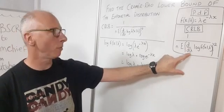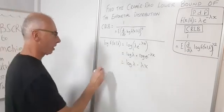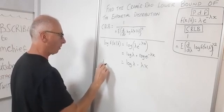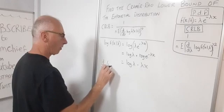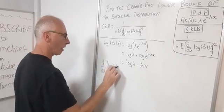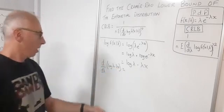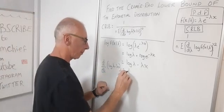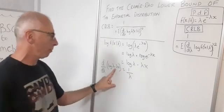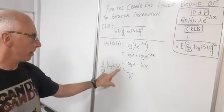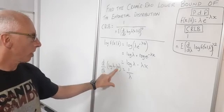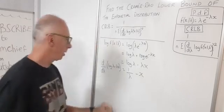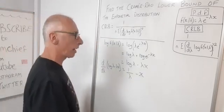Now we need to take the derivative with respect to lambda of log(lambda) minus lambda x. The derivative of log(lambda) is 1/lambda. For the term minus lambda x, x is a constant so lambda disappears, giving us minus x. So our derivative is 1/lambda minus x.